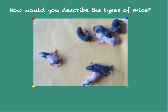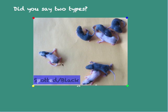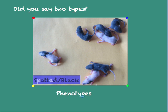How would you describe the types of mice in this picture? Did you say two types — solid black and spotted black? These descriptions describe the phenotypes, the outward appearance or the expression of genes.